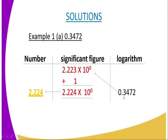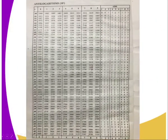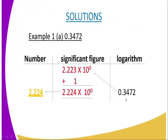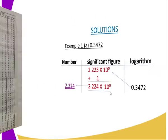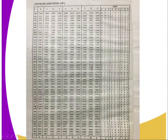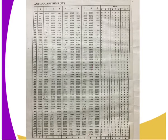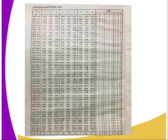In the anti-logarithm column, you look at 0.3472. You look first at the row for .34, then move across to the column headed 7. At that intersection the table reads 2.223. So you write down 2.223.